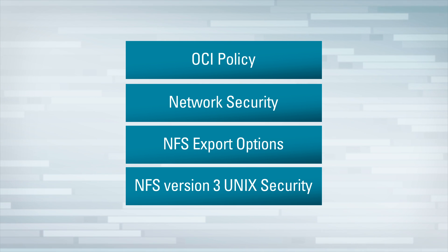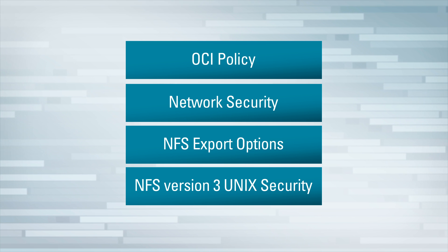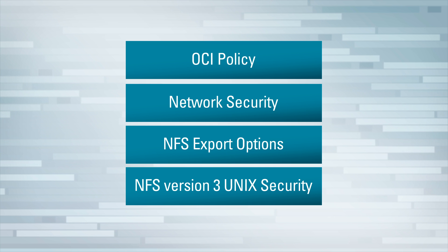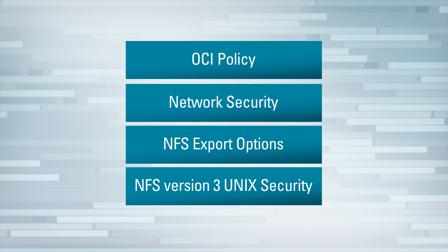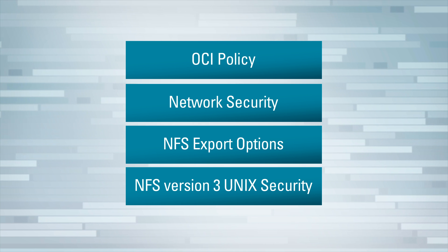The last layer is NFS version 3 Unix security that controls what operation a given Unix user can do with the files and directories in the file system, such as opening a file, reading, writing, or creating a file in a directory. Every request for file access is authorized by verifying the client's Unix user ID and group ID against the file ownership.